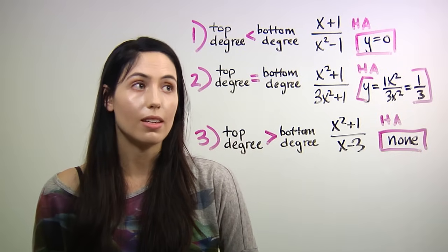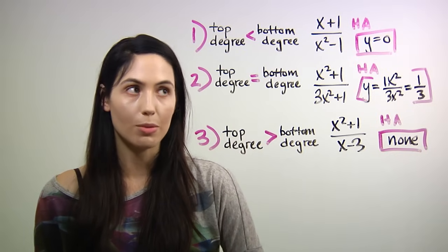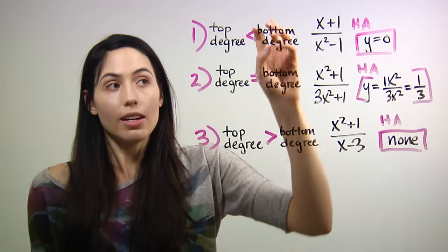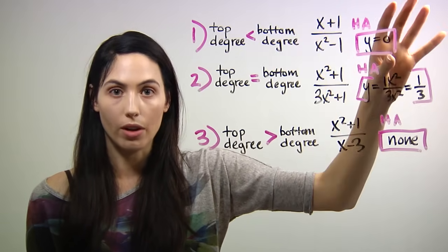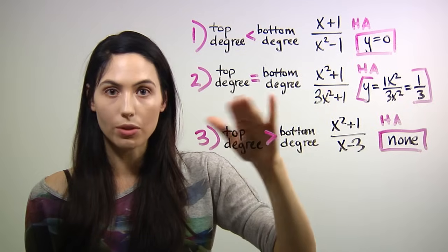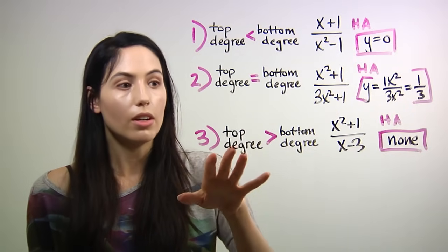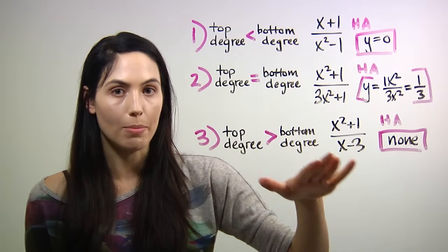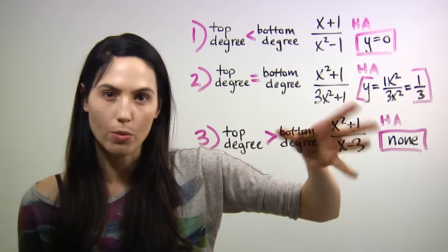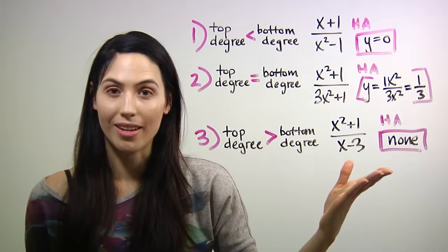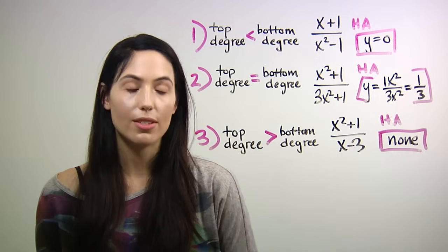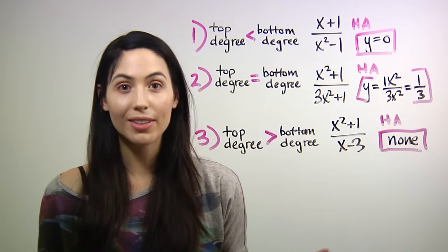So these are the three cases. It's going to be one of these three cases, absolutely. Either lower degree on top than on bottom, and the asymptote is y equals zero. Equal degrees, and the asymptote is some number. Higher degree on top than on bottom, like top heavy rational expression, and you have no horizontal asymptote, so none. So those three cases are all you need to remember. That's it.